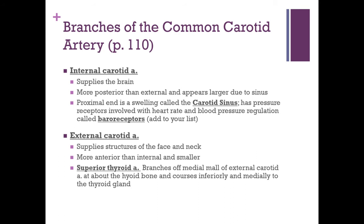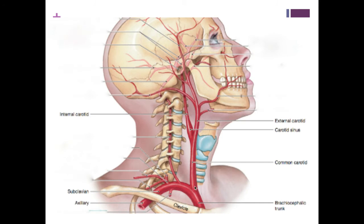The external carotid artery does not provide blood to anything inside the skull. It will have a branch called the superior thyroid artery, which is the very first branch coming off the external carotid, and it travels downward to supply the top of the thyroid gland. Here we see the common carotid artery and that split happening right here.